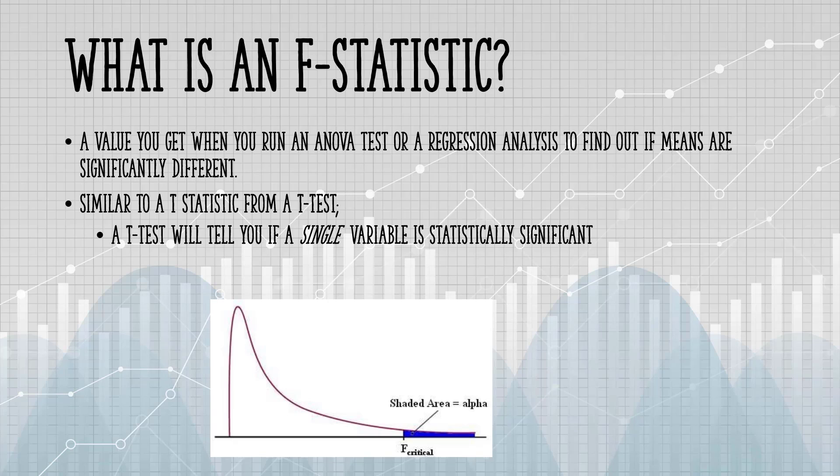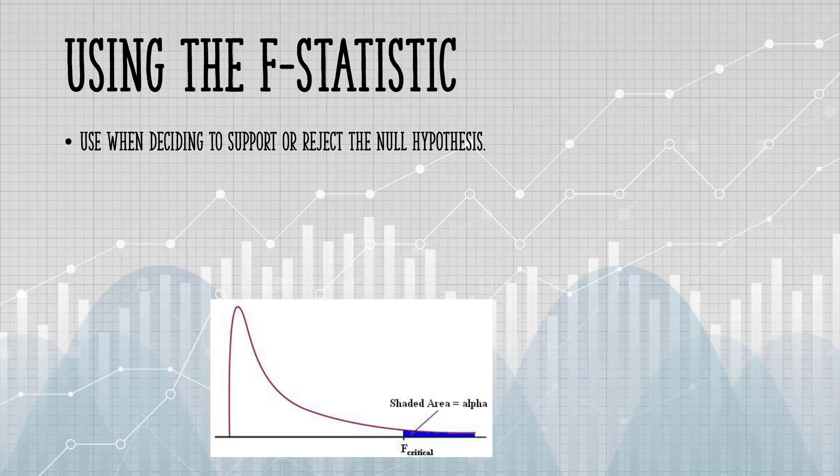A T-test will tell you if a single variable is significant. An F-test will tell you if a group of variables are jointly significant. You can use the F-statistic when deciding to support or reject the null hypothesis.